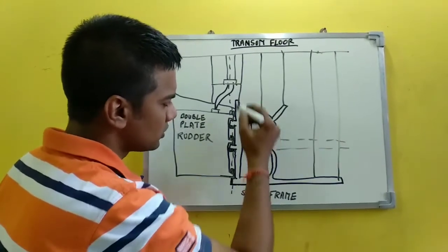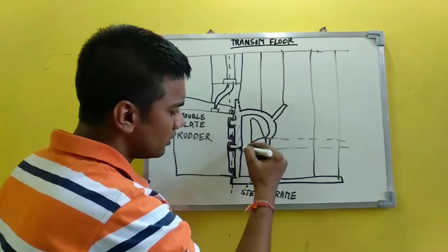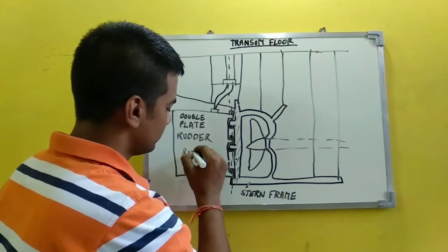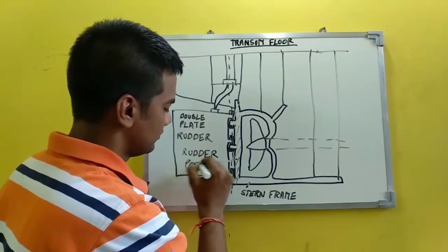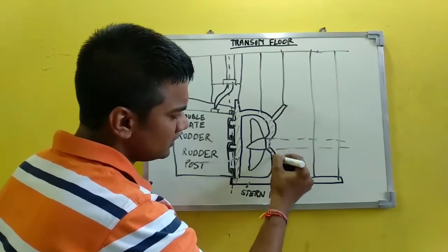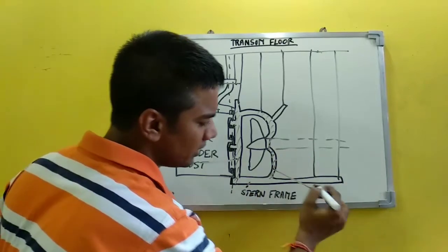Now this post, the post connecting the stern frame to the rudder, is called the rudder post. And this post, the post which is connecting the stern frame to the propeller, is called the propeller post.